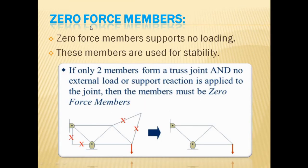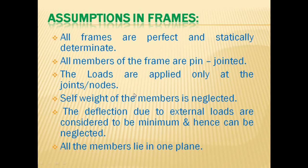Zero force members support no loading; these members are used for stability purposes. As you can see in this example, the member is loaded at one point, and some extra members exist which don't have any compression or tension — these are known as zero force members. The members marked with X in this figure neither have compression nor tension.